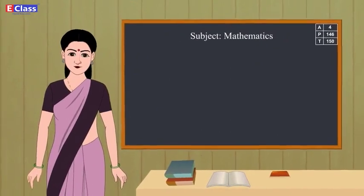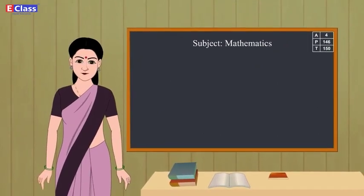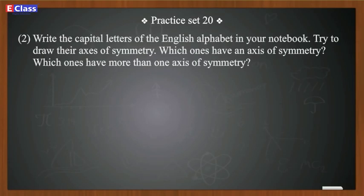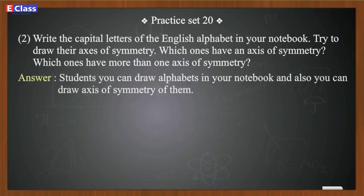Now friends, let's solve the second question of Practice Set 22. Write the capital letters of the English alphabet in your notebook. Try to draw their axis of symmetry. Which ones have an axis of symmetry? Which ones have more than one axis of symmetry? Answer: Students, you can draw alphabets in your notebook and also you can draw axis of symmetry of them.